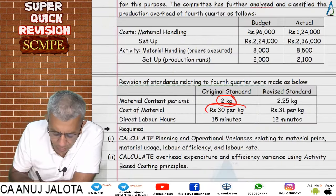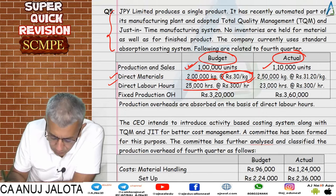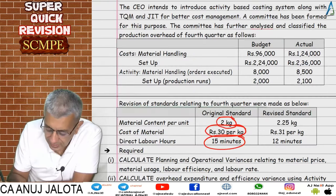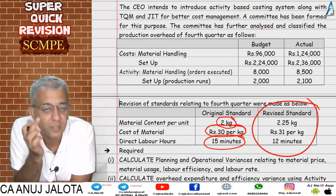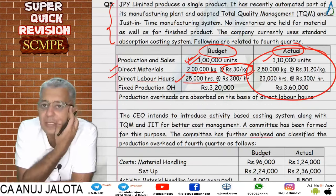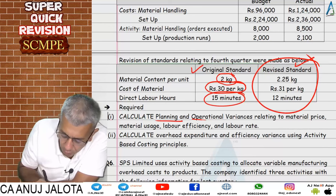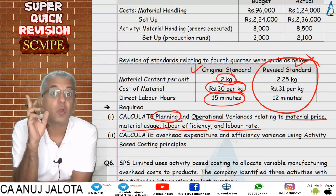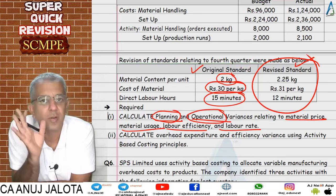The cost of material is 30 per kg. Direct labor is 25,000 hours for 1 lakh units — 0.25 hours, which is 15 minutes. The company has also revised the standards. In our language this is the original standard, the new standard, and the actual for materials and labor. Part one asks you to compute planning and operational variances relating to material price, usage, labor rate and efficiency.